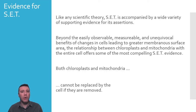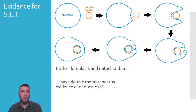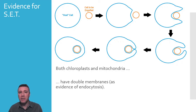Both chloroplasts and mitochondria have a double phospholipid bilayer, and the presence of two membranes is evidence of endocytosis. In this model, a larger blue cell prepares to engulf a smaller orange one. The blue cell begins to extend its cell membrane out and around the orange one. Eventually, the two extensions of the blue cell's membrane meet, fuse together, and pinch off. The smaller orange cell, now inside the larger one, possesses its original phospholipid bilayer as well as the one from the larger cell.